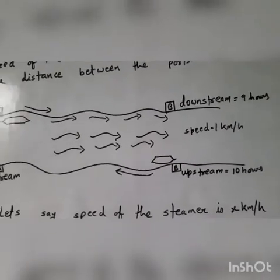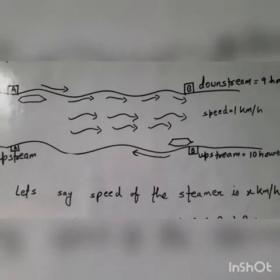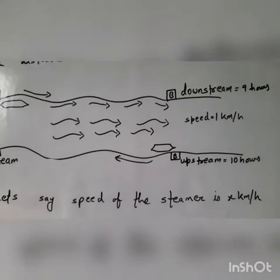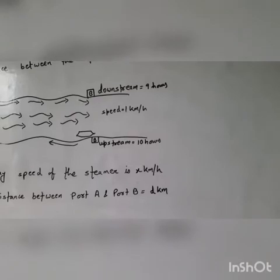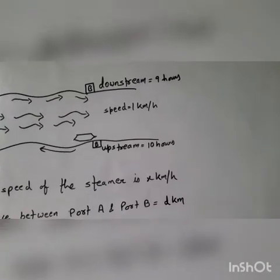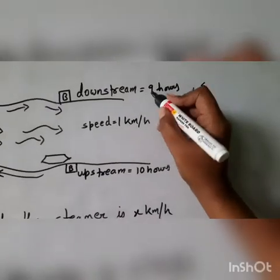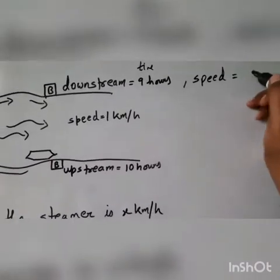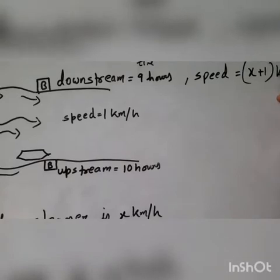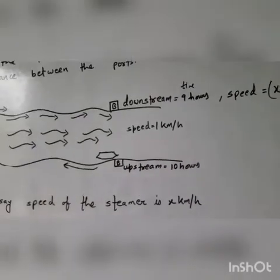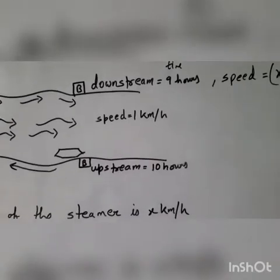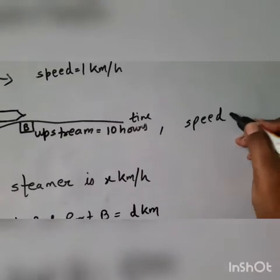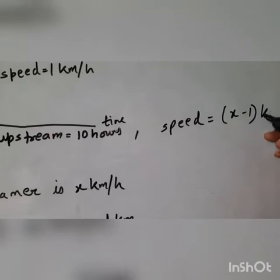So this information we have been given. We will start by taking, let's say speed of the steamer be x km per hour. So speed will become x plus 1 km per hour, because speed of stream and speed of steamer will be added. Downstream time is given 9 hours.